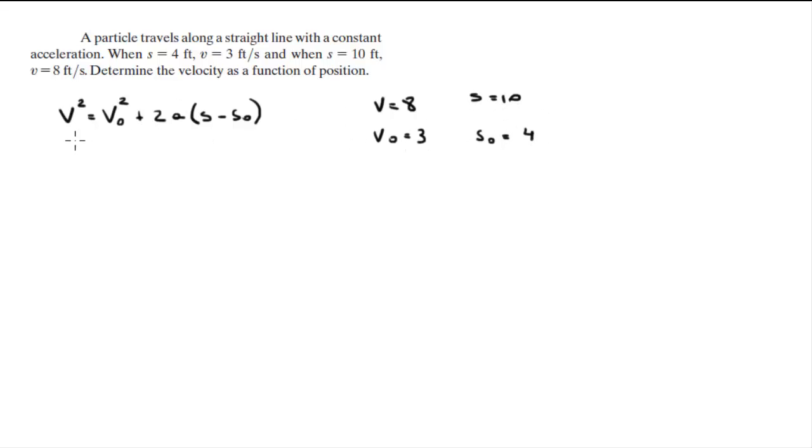So we're going to plug in these numbers right here, and we're going to get that 8 squared is equal to 3 squared plus 2 times a times 10 minus 4. And we're doing this to find the acceleration. The acceleration is constant, that's why this equation holds true.